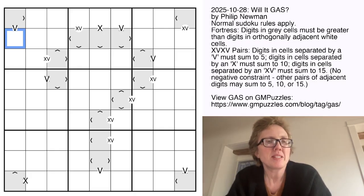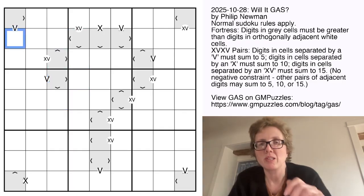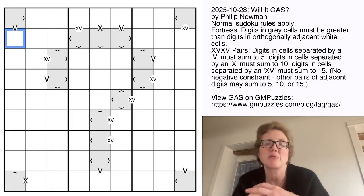Mind that you distinguish the V's from these little greater than or less than signs that appear on some of these gray cells. The V's are the bigger, kind of more elongated ones, and a V indicates that the two adjoining cells have to sum to exactly 5. An X indicates that the two adjacent cells sum to exactly 10, and an XV indicates that they sum to 15.